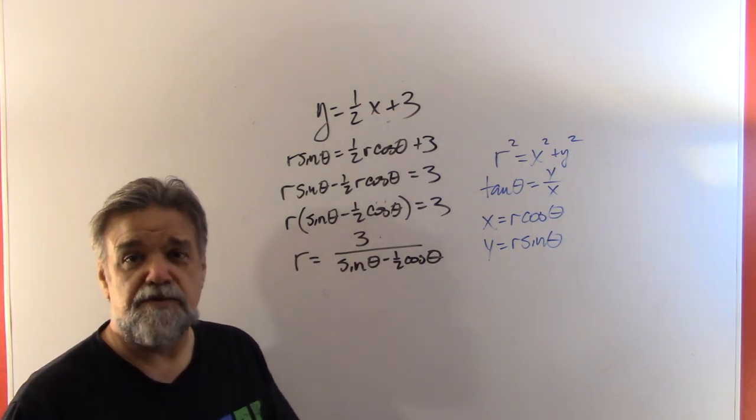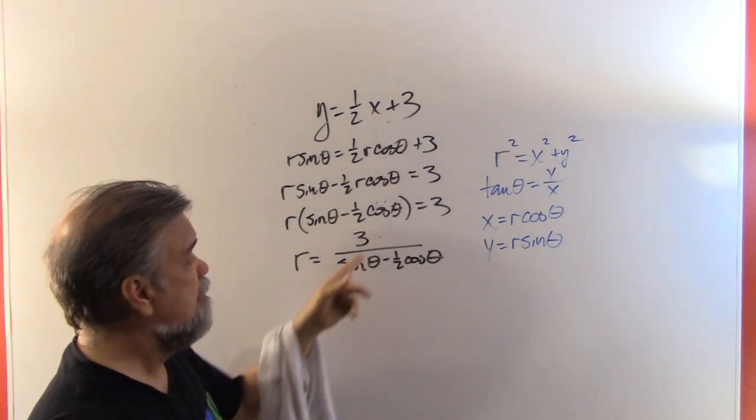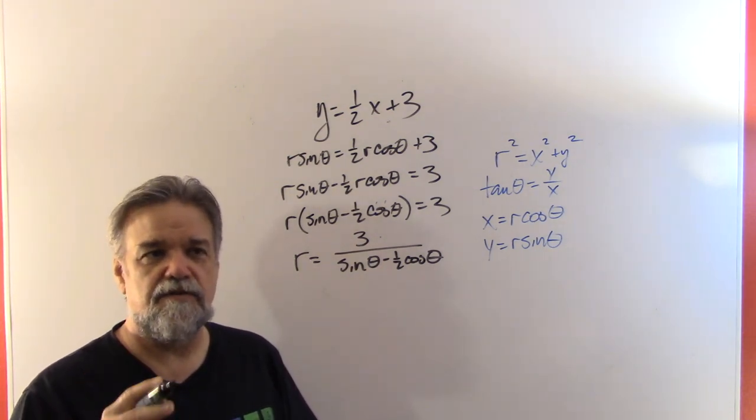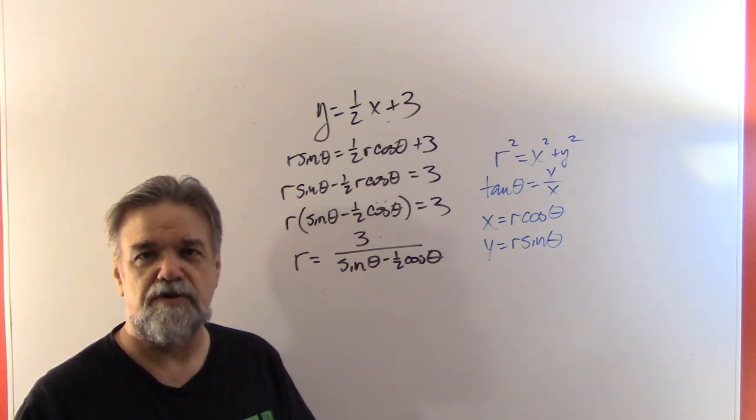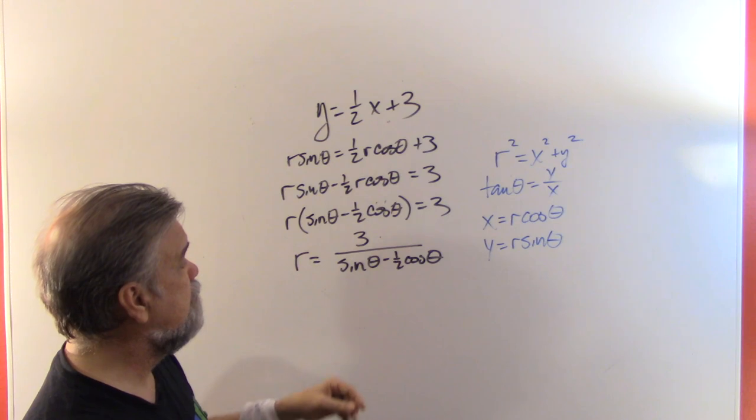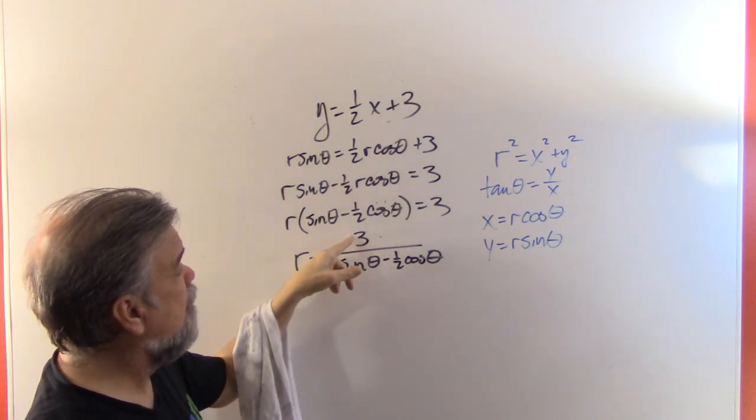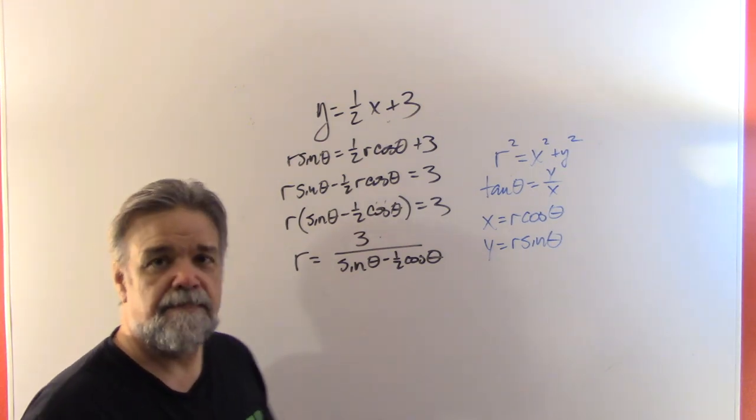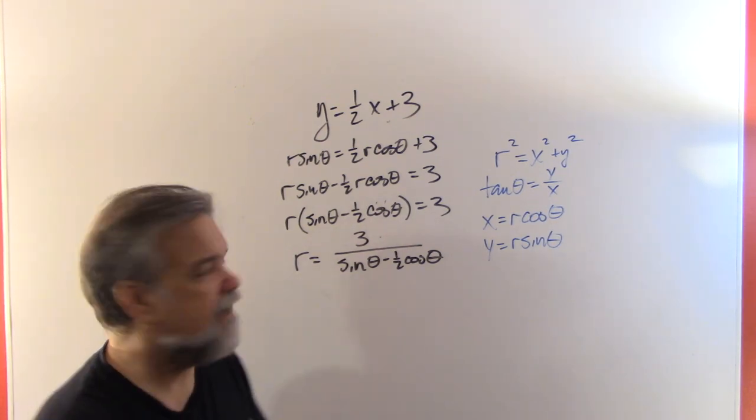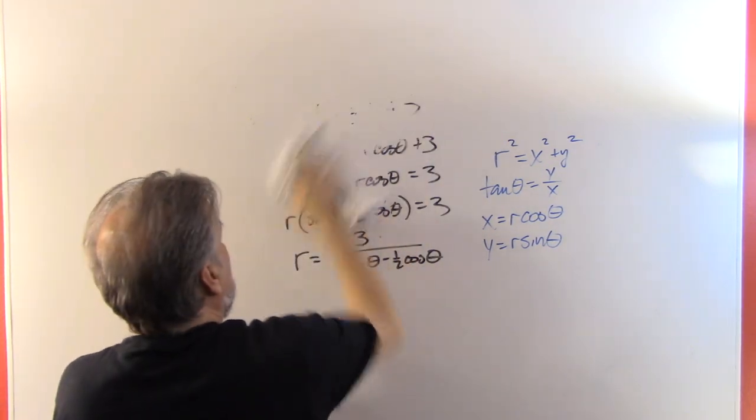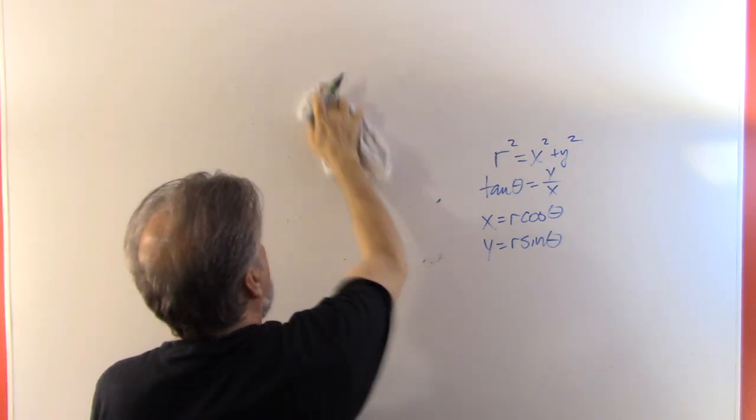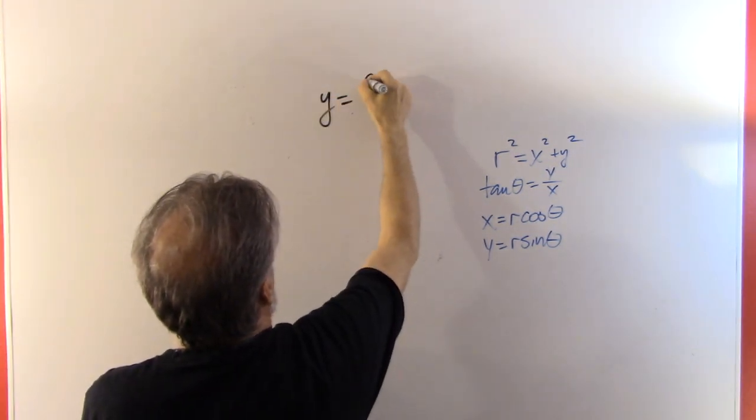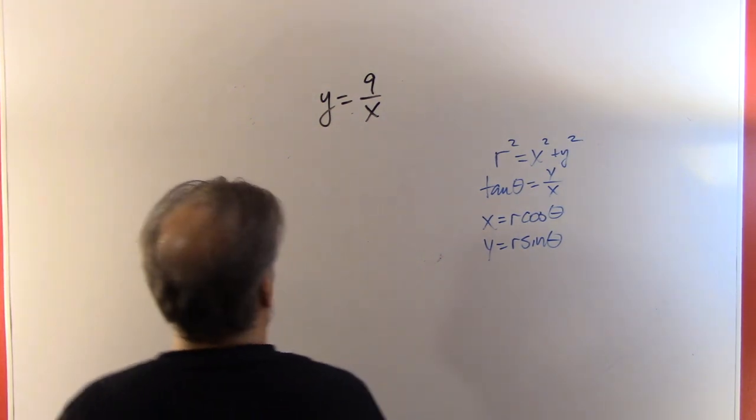Matter of fact, you can see from this that you could write any line using this, well, actually any line other than the one that we did before, other than something going through the origin. You can write any line like this where you have your y-intercept and your slope right there. Okay. Let's do another one. Let's do a rational function. Let's do y equals 9 over x.